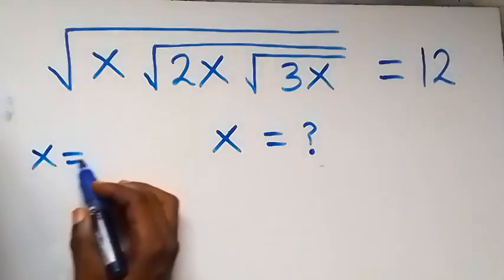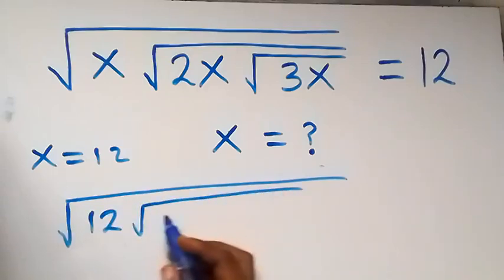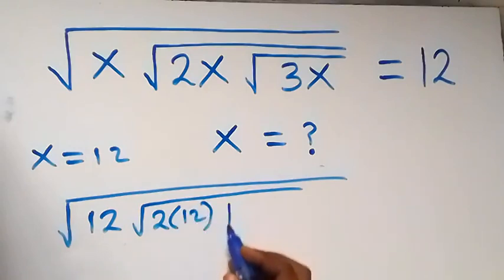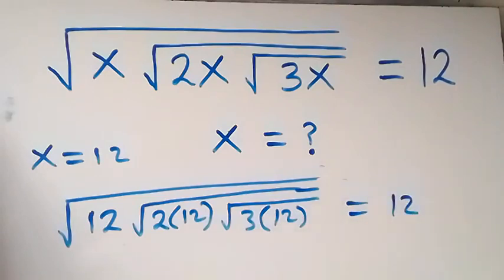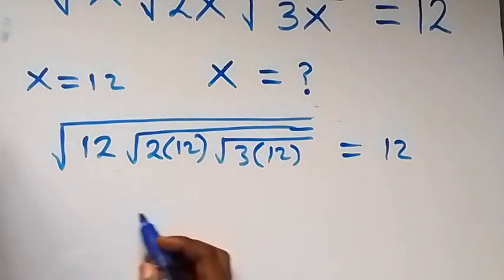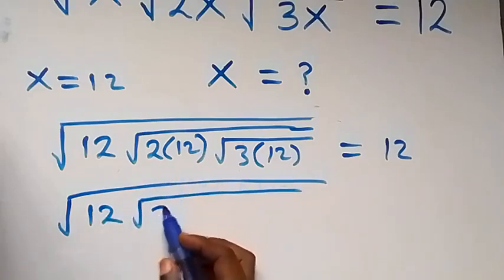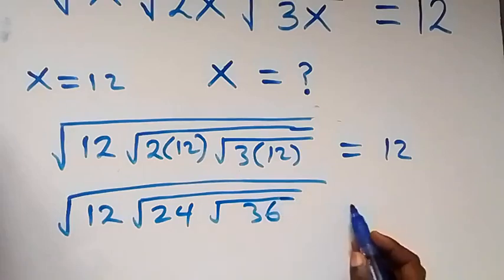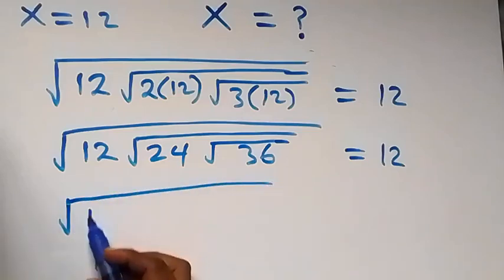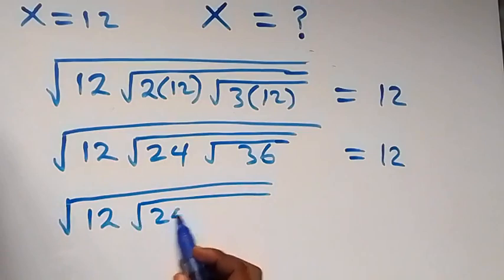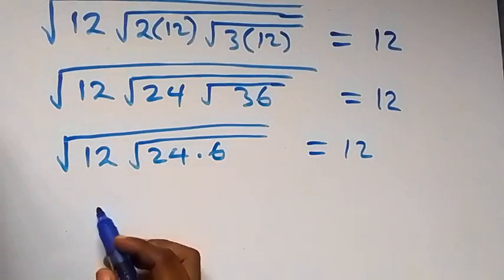Substituting x equals 12 into what we have: this becomes square root of 12, then square root of 2 times 12, then square root of 3 times 12. So we have square root of 12, then 2 times 12 is 24, then square root of 36. Here root 36 is 6, so we have square root of 12, then square root of 24, then times 6, and this should equal 12.